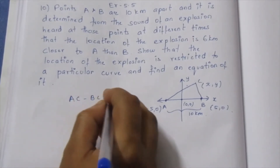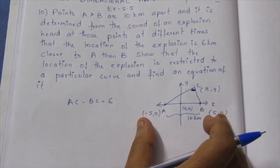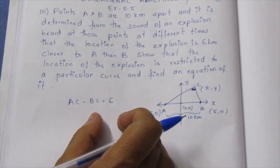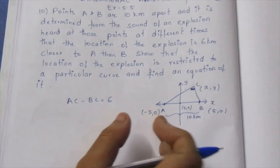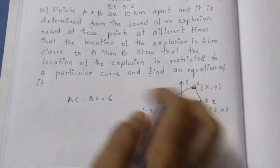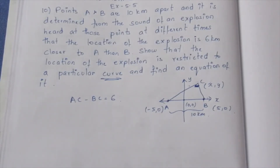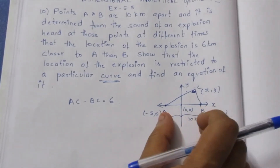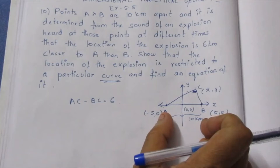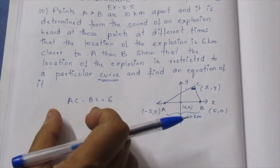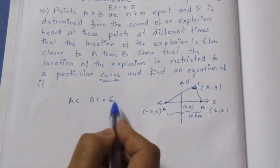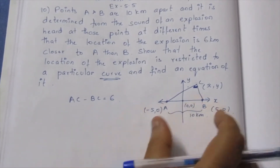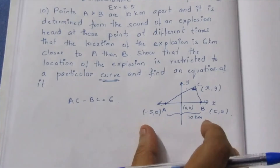AC minus BC is equal to 6. We start with the hyperbola. For a hyperbola, the difference of distances is equal to 2a. We use that formula. AC minus BC equals 2a in absolute value. So this is a hyperbola. We apply the distance formula.